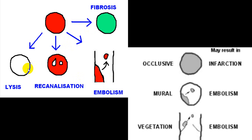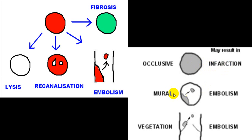Thrombus outcomes include: complete opening by thrombolysis through natural fibrinolytic activity present in the vascular system; re-canalization with partial blood flow resumption; dislodgement giving rise to thromboembolism; or complete occlusion leading to infarction — complete lack of oxygen and nutritional supply causing tissue death.